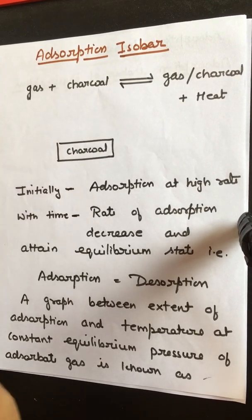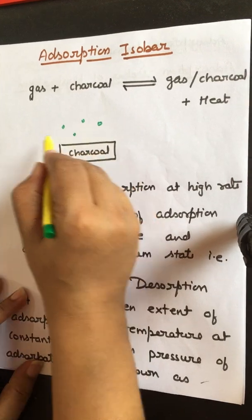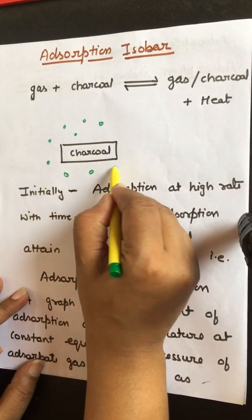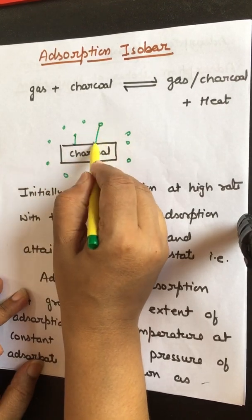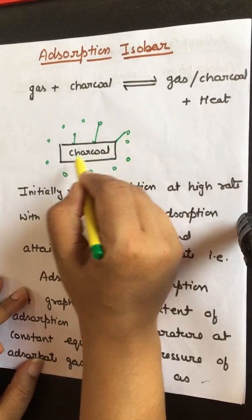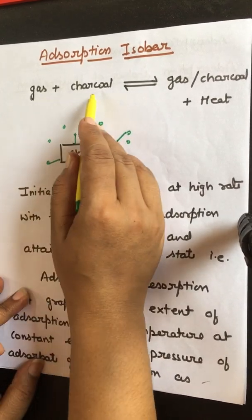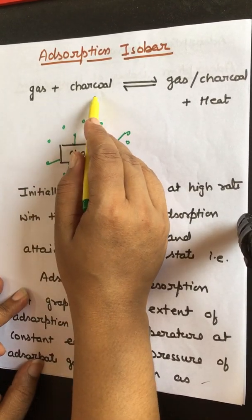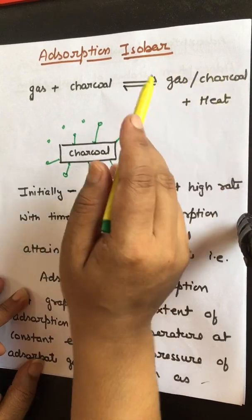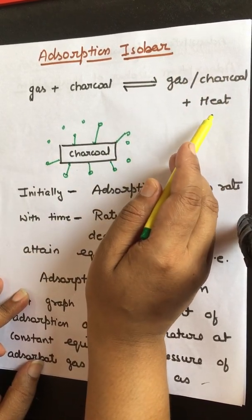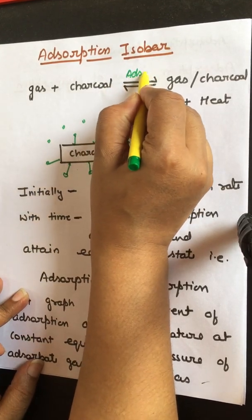What happens during adsorption? Let's suppose these are the gas particles and this is charcoal — activated charcoal. These gas particles get adsorbed or accumulated at the surface of charcoal, giving adsorption. During this process, heat is evolved. This process is known as adsorption.